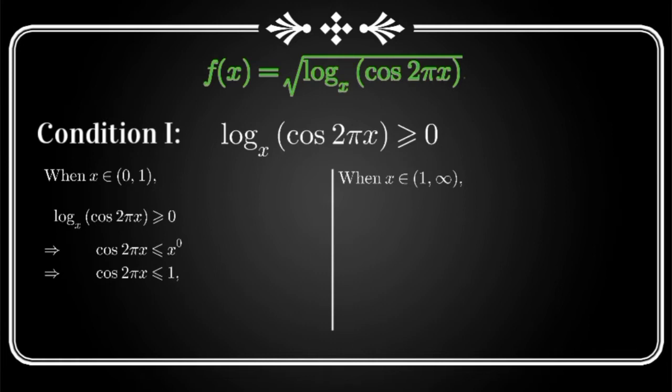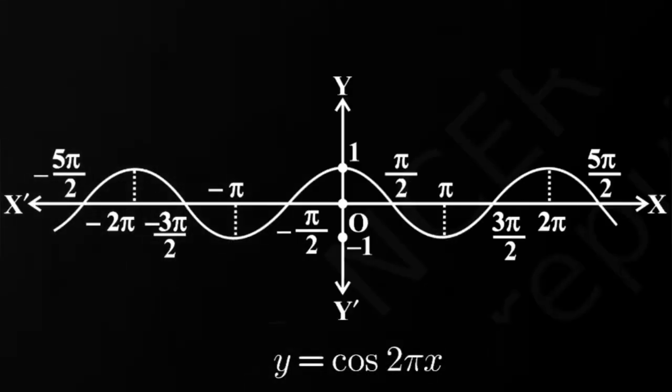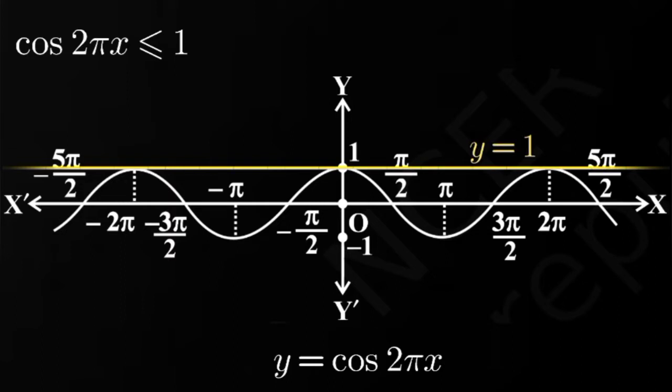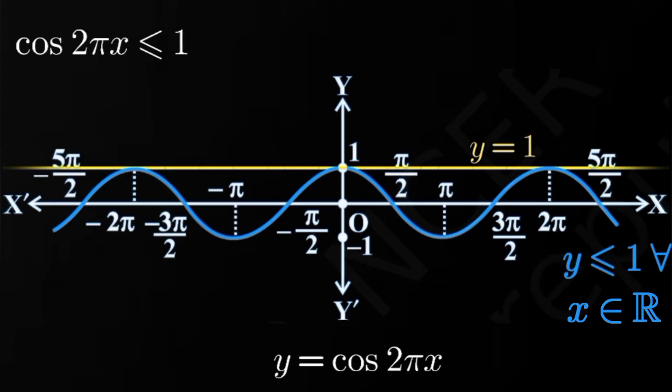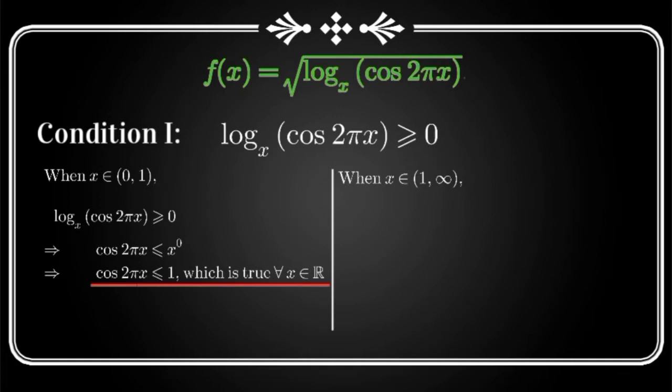Now we notice one thing that this statement is correct for all real values of x. Why am I saying this? Let's look at the graph of cos 2πx. So we have the inequality cos 2πx is less than or equal to 1. So let me draw a line cos 2πx or y equal to 1 on the graph. Now this whole region, that is the whole graph of cos 2πx is equal to y, is coming under or is included in the line y is equal to 1. So it is obeying the inequality. So whole graph of cos 2πx is equal to y obeys the inequality cos 2πx is less than or equal to 1.